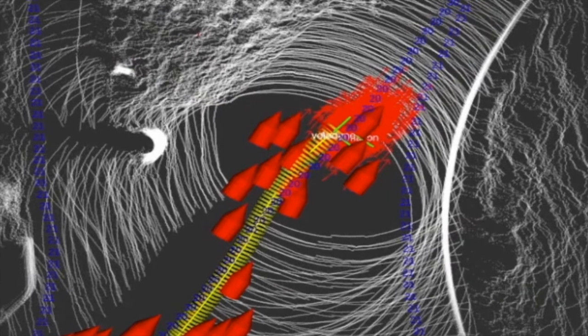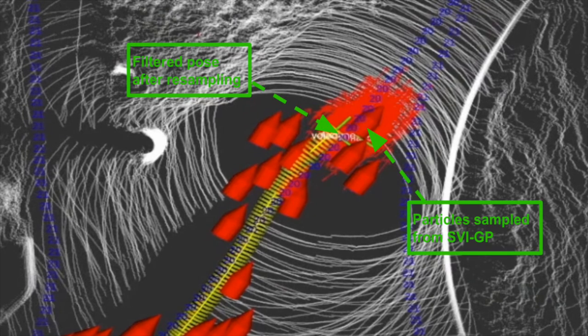In this demo, the red arrows are the global pose estimation from the deep nets, and the yellow arrows are ground truth poses. You can find, after filtering, our system achieves a very high accuracy of localization.